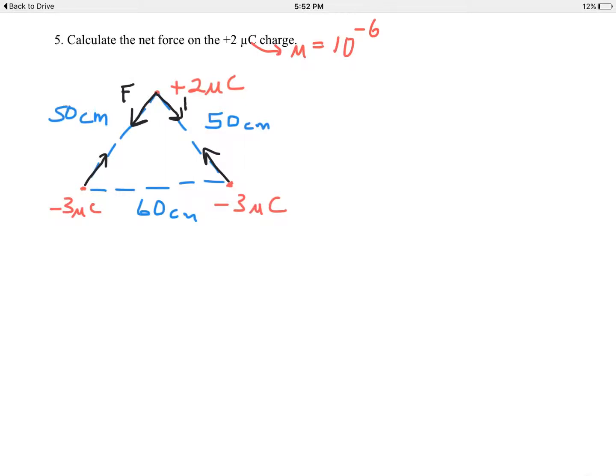So F, according to Coulomb's law, F equals K Q sub one times Q sub two over r squared.